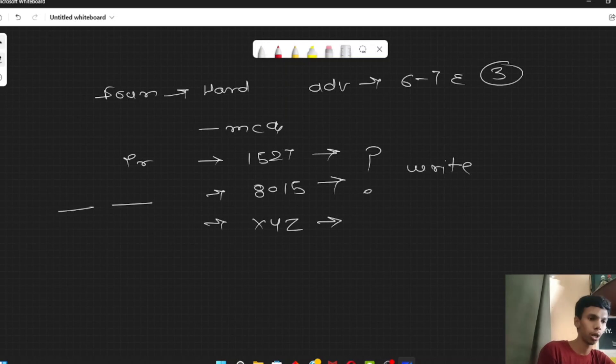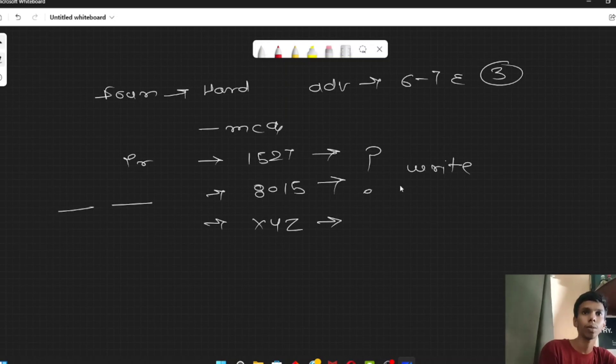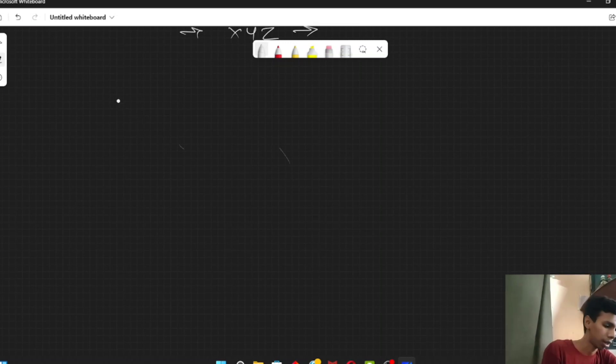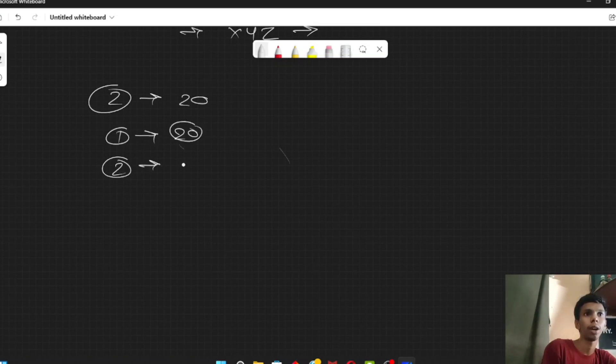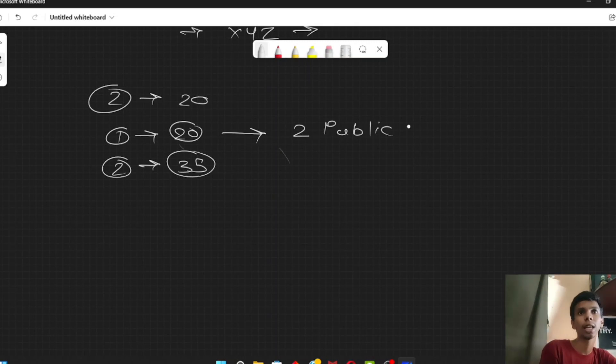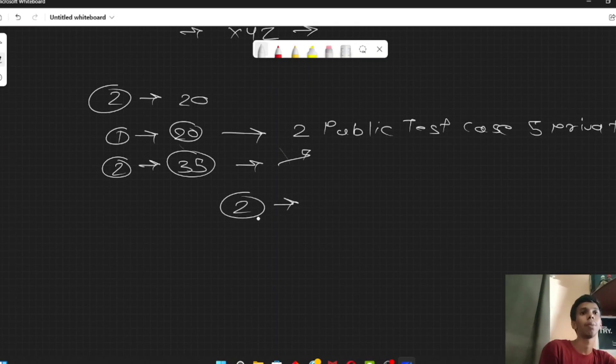And the coding question - remember that the coding part had two questions, one was 20 minutes and the second was 35 minutes. Now, there were 2 public test cases, which you will see. And the private test cases are hidden. The test cases should pass. If it is passed, it is good, and it is possible to have your selection for digital.